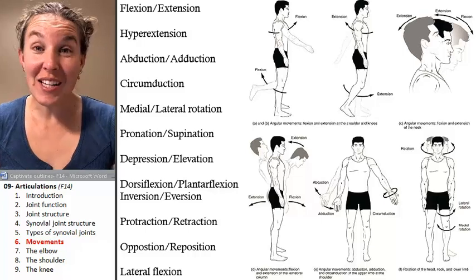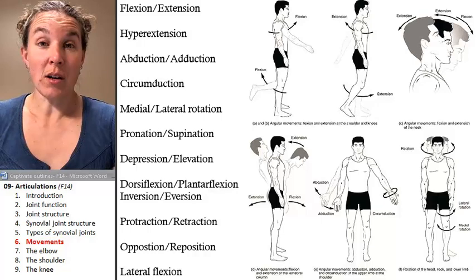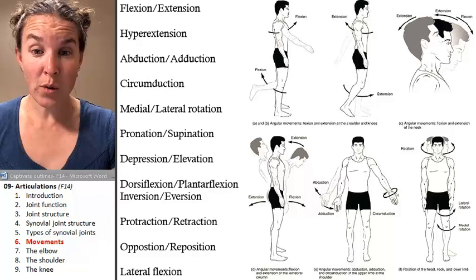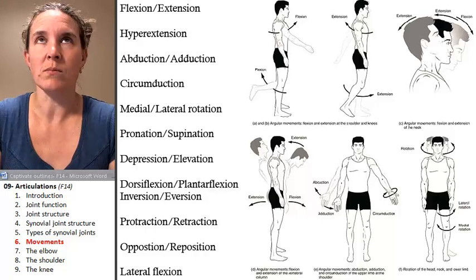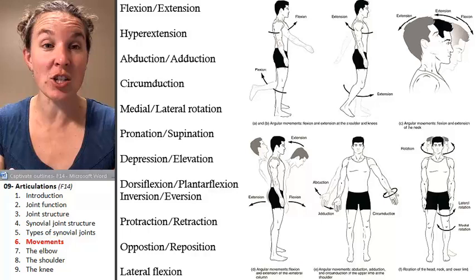Now we get to look at all the movements that are possible at synovial joints. Synovial joints are diarthroses. All our other structural categories of joints are not diarthroses, so there's minimal to no movement at those joints. Why bother classifying the movement? Because there's hardly any that's there. So there are very specific definitions of movement when you're talking about an anatomical body.